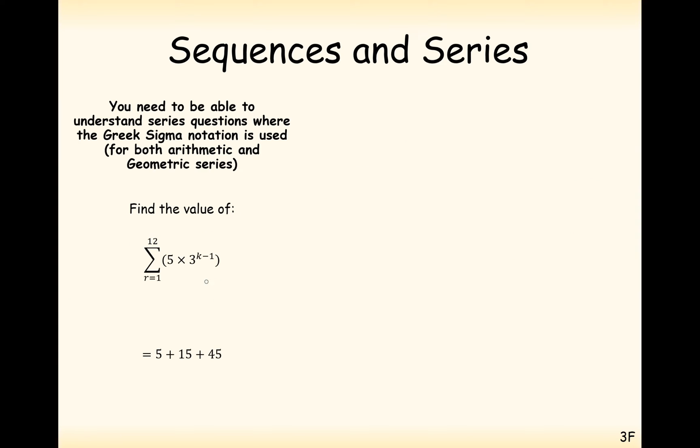In this case here, we're going to be adding up the numbers from 1 up to 12 that have been substituted into this formula here. So it might help to write out the first couple of terms. This will carry on and on and on. So we first substitute in 1 and we get 5 times 3 to the power of 1 minus 1. Now, 1 minus 1 is 0, but 3 to the power of 0 is 1. So 5 times 1 is 5.